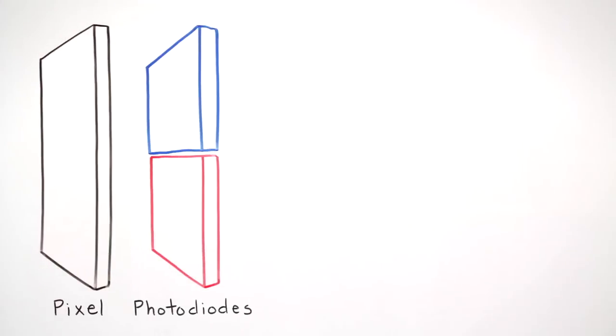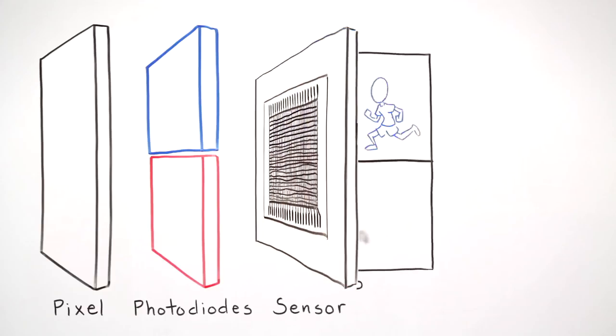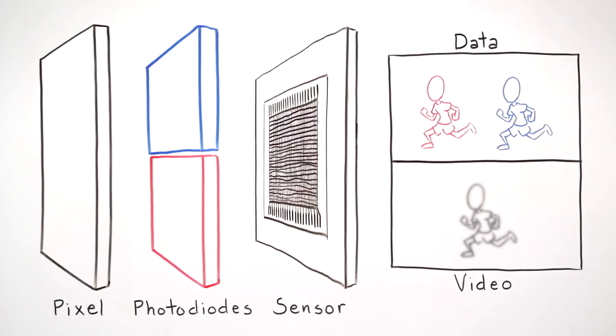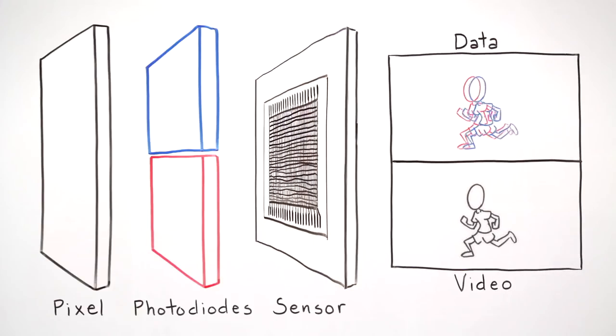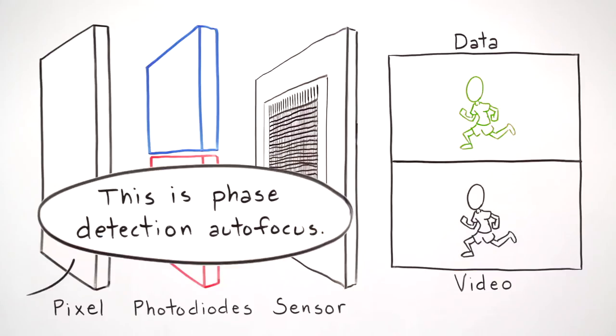Two diodes are packed onto each pixel and allow the system to quickly and accurately measure discrepancies in light wavelengths to find focus. This is known as phase detection.